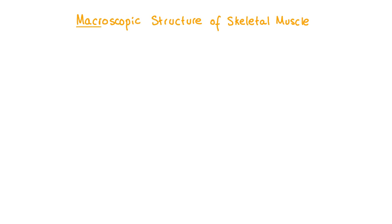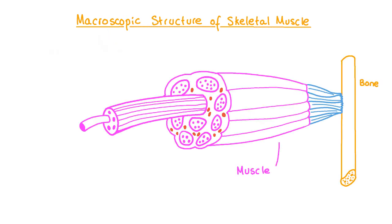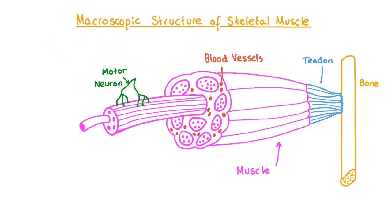Let's take a closer look at the macroscopic structure of skeletal muscle and how all of its different components function. The word macroscopic refers to structures which are visible to the naked eye without the need to use a microscope. Each muscle is considered an individual organ and contains different tissues such as the skeletal muscle tissue itself, nervous tissue mostly consisting of motor neurons, blood tissues, and connective tissues like tendons which attach the muscle to bones.